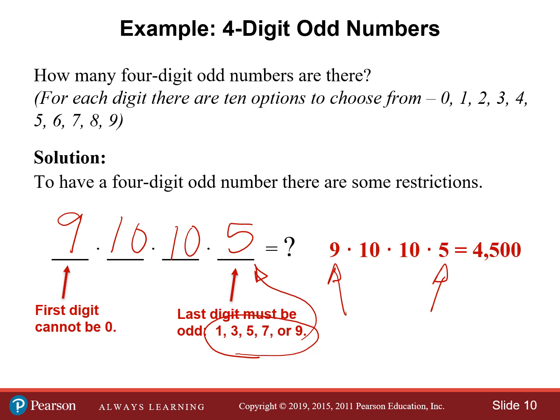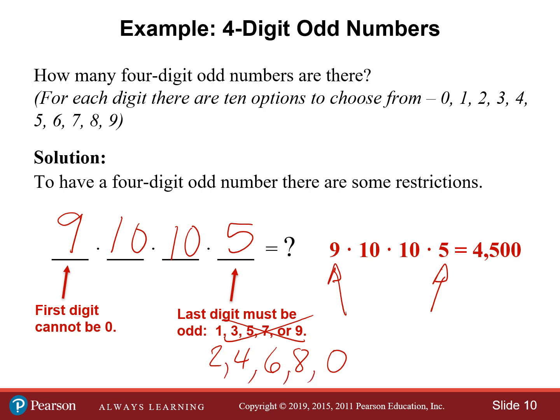If I had asked how many four-digit even numbers there are, it turns out we get the exact same answer. The only difference is that instead of using one, three, five, seven, or nine at the end, we'd use two, four, six, eight, or zero. But you'll see that we still have five different options to choose from for our last digit. So asking for odd versus even numbers does not change our answer.